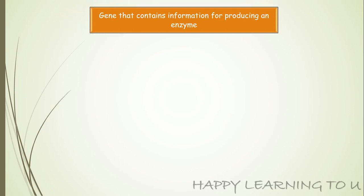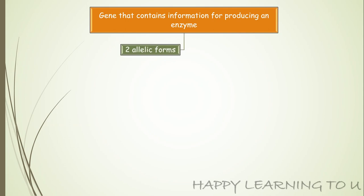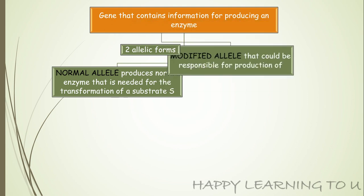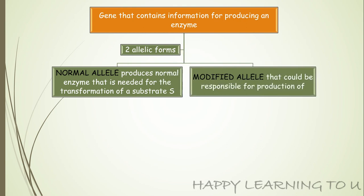Let's take an example of a gene which contains information for producing an enzyme. The two allelic forms of this gene are: the normal allele, which will produce a normal enzyme needed for the transformation of a substrate — let's call it S — and the second allele, which is the modified allele.